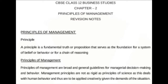Before starting with the chapter, one should know what is the meaning of principle. A principle simply explains the cause and effect relationship between two or more sets of variables under a given situation. For example, let's take the current situation of coronavirus. Businesses are shut down, so the effect will be that the economy will go down. This is the cause and effect relationship — coronavirus was the cause and the result is that the economy faces a crisis.